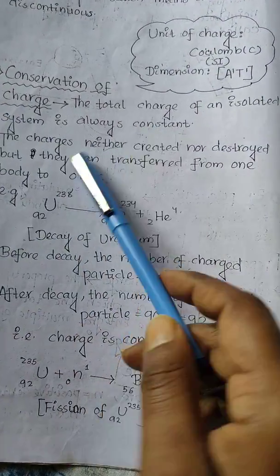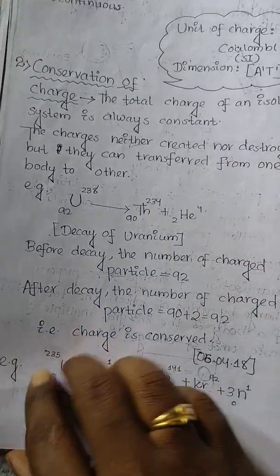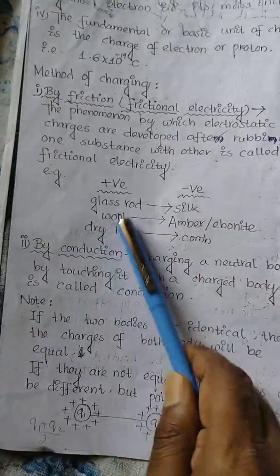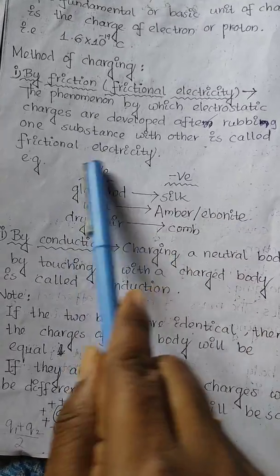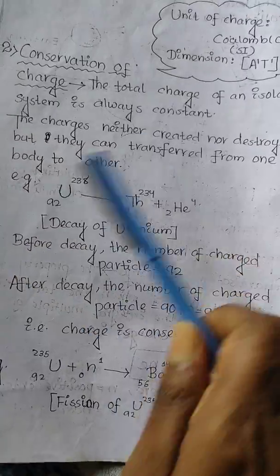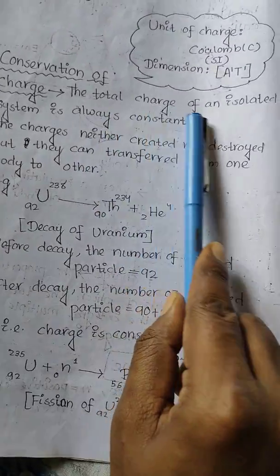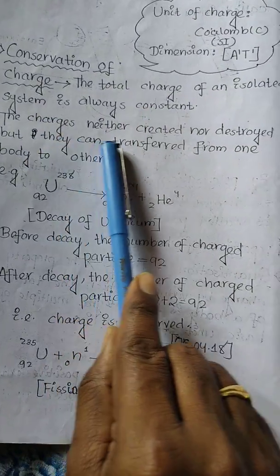Conservation of charge: the total charge of an isolated system - not a single body but a system involving more than one body - is conserved. For example, if glass and silk are rubbed together, the system's total charge remains constant. Glass loses electrons and silk gains electrons.